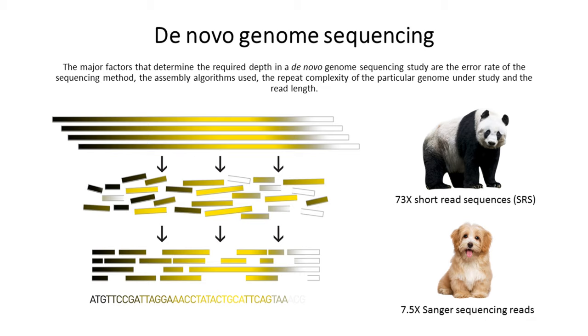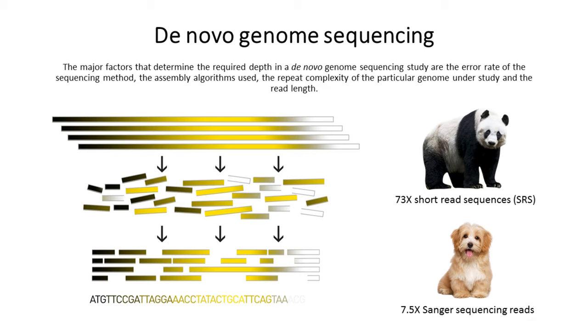The major factors that determine the required depth in a de novo genome sequencing study are the error rate of the sequencing method, the assembly algorithms used, the repeat complexity of the particular genome under study, and the read length.